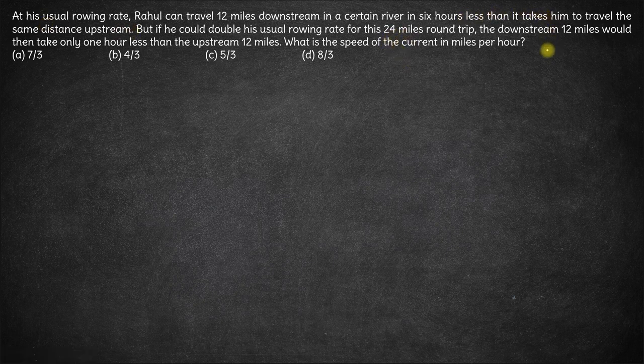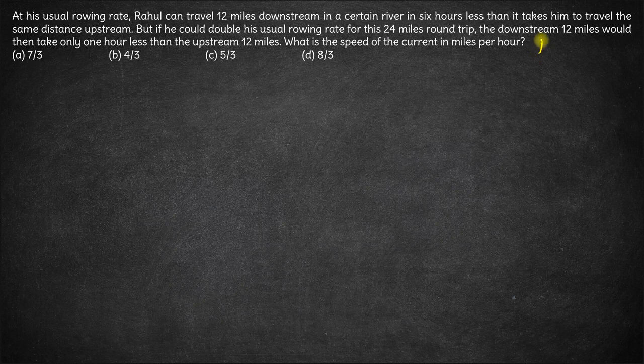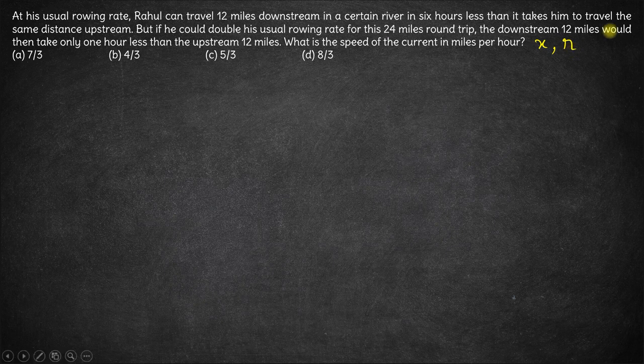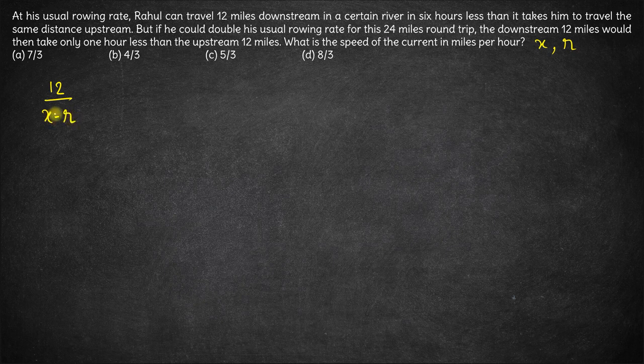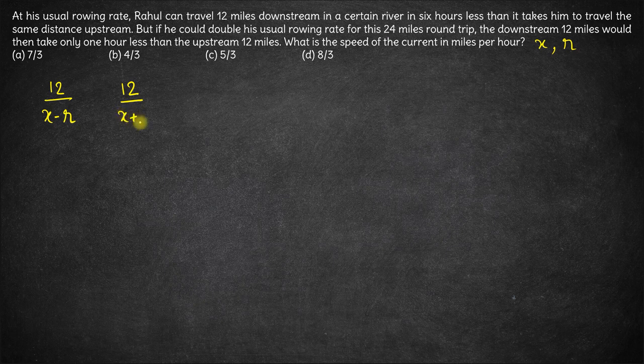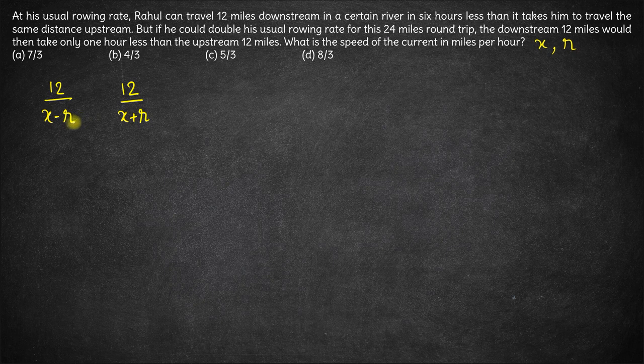So let's say Rahul's speed in the river is x and the river's speed is r. So time taken to go up will be 12 upon x minus r. Time taken to come down will be 12 upon x plus r. When he is coming down, effective speed will be x plus r. When he is going up, effective speed will be x minus r.